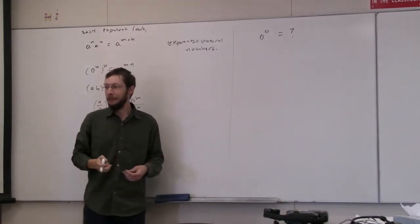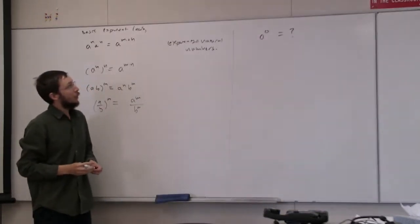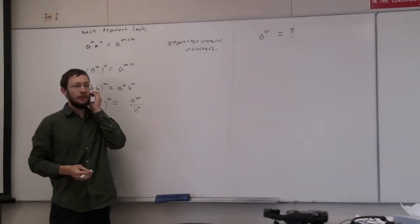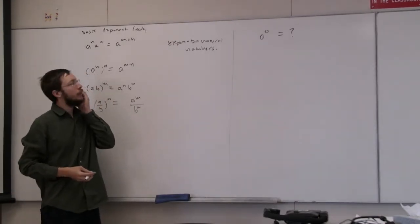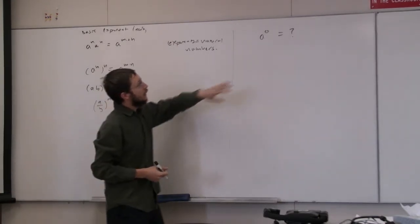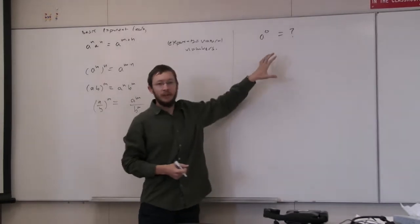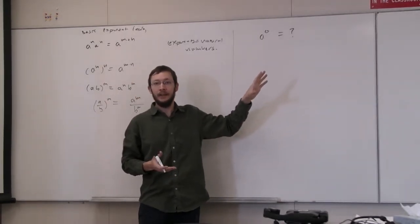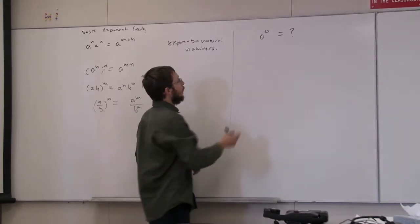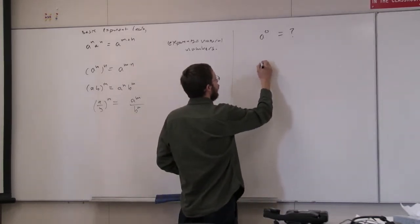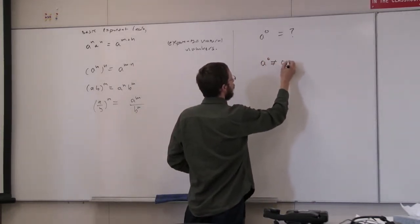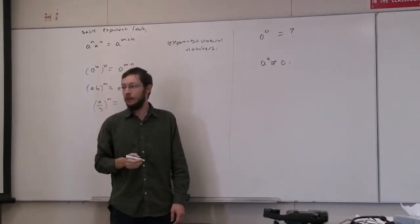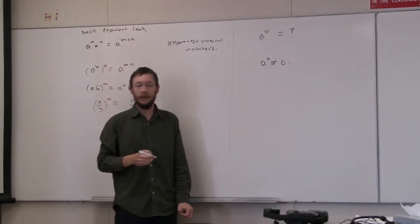Obviously everyone knows it's equal to one, but it's always confusing for basic algebra students — why in the world is a to the zero equal to one? Let's first verify that a to the zero is not zero, which is what everyone thinks it should be. How do we know that? Let's suppose that it is zero and do a little proof by contradiction.